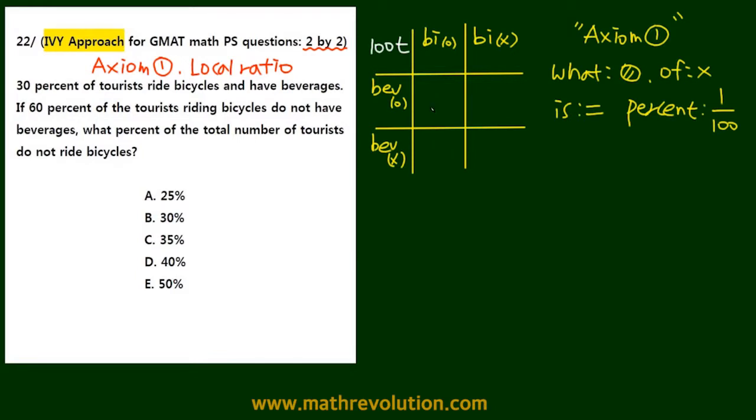So we know that this area is 30% of tourists who ride bicycles and have beverages, so we get 30T here. And the second bit is 60% of tourists riding bicycles do not have beverages. Now you need to notice that we're not dealing with the total number of tourists, but a percentage of a part of the total. So this is what we call a local ratio, a portion of a portion.